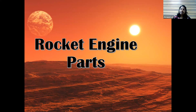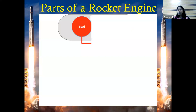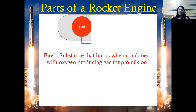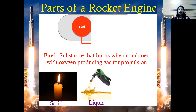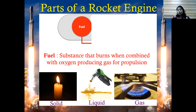The first part is the fuel. Fuel is a substance that burns when combined with oxygen, producing gas for propulsion. Fuel can be in the form of a solid, like candle wax, in the form of a liquid, like gasoline, which propels our automobiles, or in the form of a gas, like what we use for camping. So we have solid, liquid, and gaseous states in which fuel can be used.